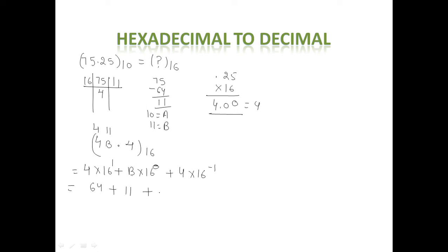Plus 4 divided by 16. After addition, after solving this, we get 75.25 in the form of decimal. And this is the method how to convert decimal to hexadecimal and hexadecimal to decimal.